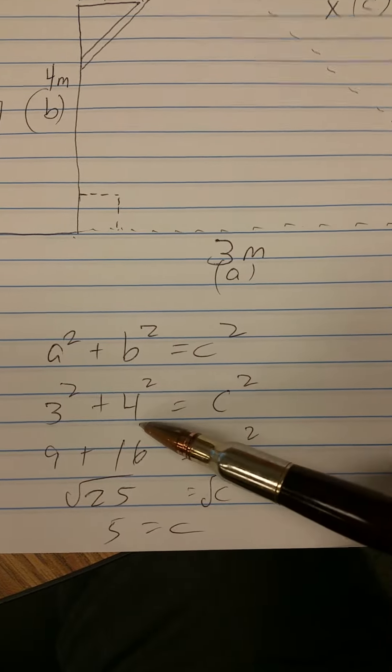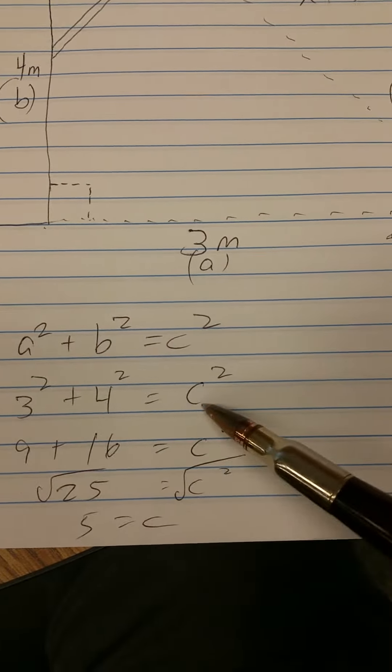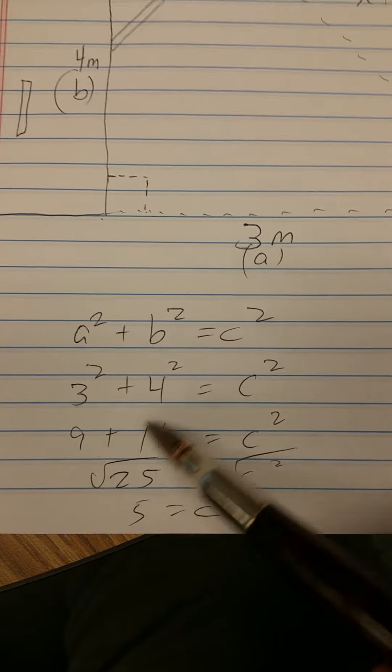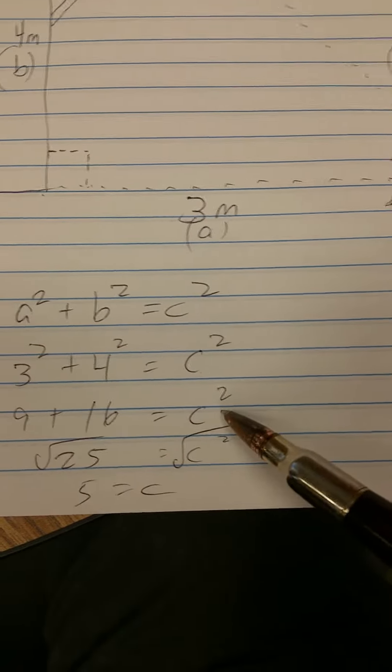A is three, B is four, so three squared plus four squared equals C squared. Three squared is nine, four squared is 16, still equals C squared.